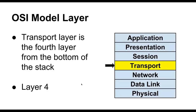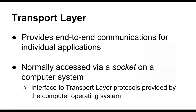The transport layer is the fourth layer from the bottom of the stack in the OSI model, and it is consequently layer 4. The purpose of the transport layer is to provide end-to-end communications for individual applications that are network aware.